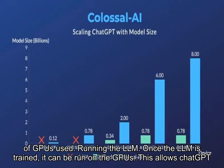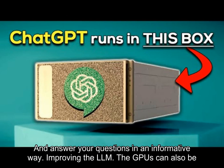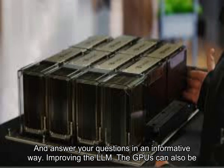Once the LLM is trained, it can be run on the GPUs. This allows ChatGPT to generate text, translate languages, and write different kinds of creative content.